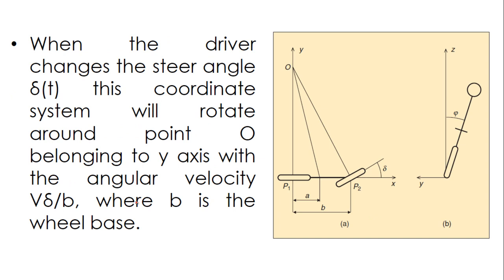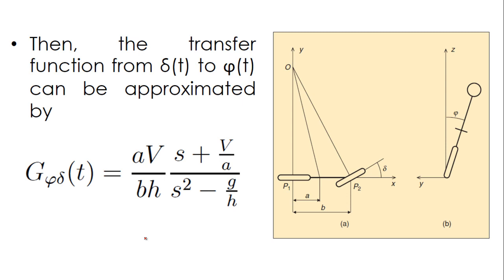When the driver changes the steer angle, the coordinate system will rotate a little bit around a point which belongs to the y-axis. The angular velocity of this rotation will be v times delta divided by b, where v is the tangential speed. Please refer to my explanation at the end of this video. The transfer function from delta to phi can be approximated by the given transfer function.